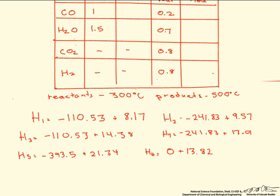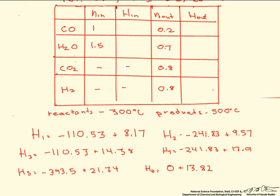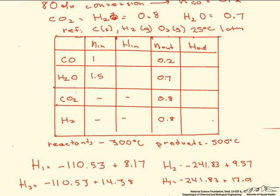So when we put these all together, let's put them back into our enthalpy table. So this is minus 102.36. This is minus 232.36. This is minus 96.15, minus 224.82, minus 372.16, and finally 13.82.